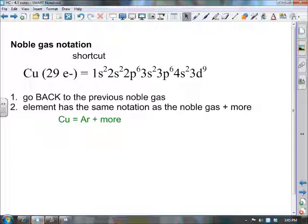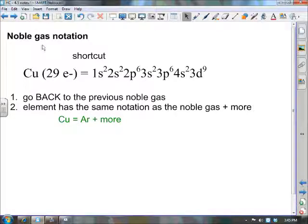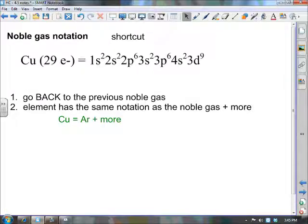It's simply called noble gas notation or noble gas configuration. And this can apply to both writing the exponents, which is electron configuration, or drawing the arrows, which is orbital notation. So it's a shortcut. What I'm going to do is start with copper. Copper has 29 electrons. So what I've written out there is its electron configuration, and again, all the exponents add up to 29.